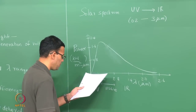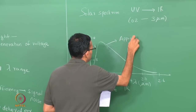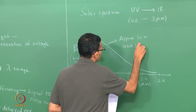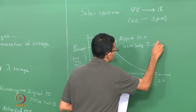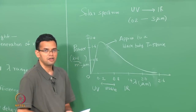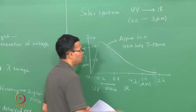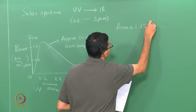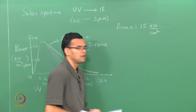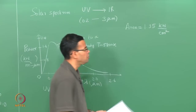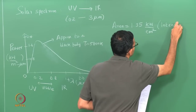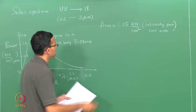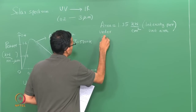This sort of spectrum can be approximated to a black body whose temperature is around 6000 Kelvin. The area under the curve gives the total intensity of the incoming solar radiation. This area has a value of around 1.35 kilowatts per square centimeter, which is the intensity of the solar radiation per unit area.